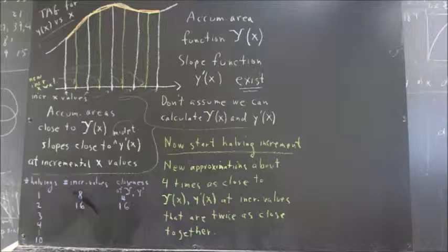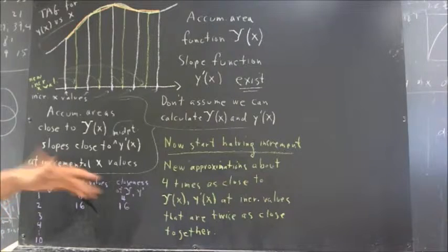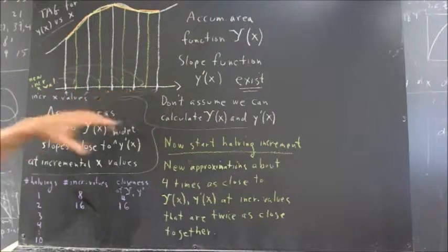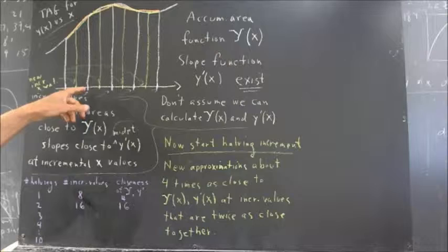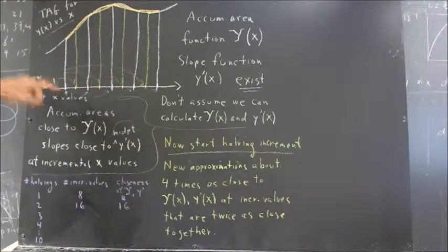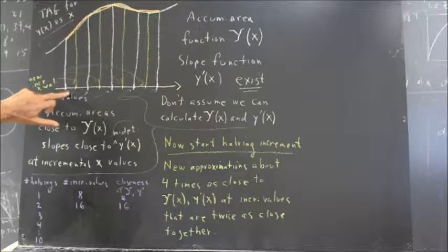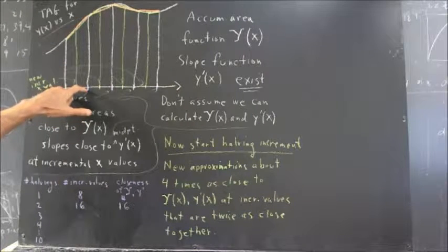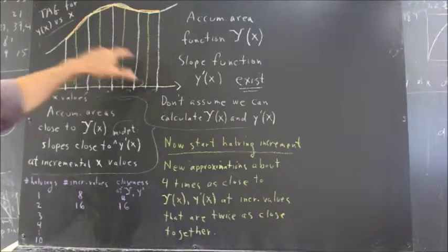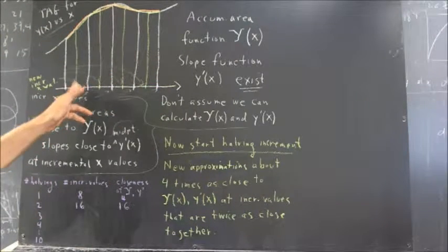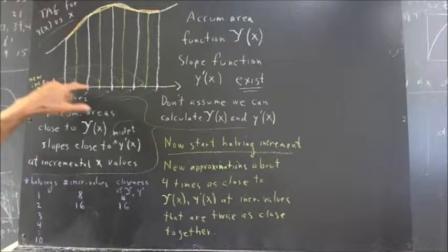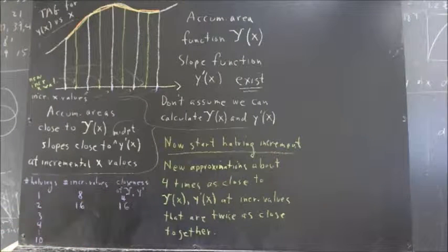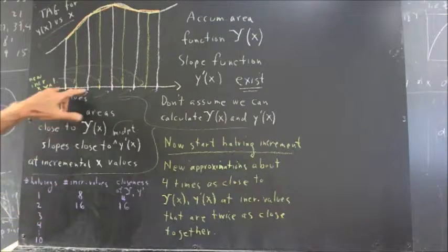Now let's say we continue this process. How many halvings do we have? If we did this once, we've had one halving. We originally started with four incremental values — at the end of the first, second, third, and fourth increment of our original graph, we have an accumulated area; at the midpoint of each increment, we have a value of y prime. So if we halve once, we go from four to eight incremental values.